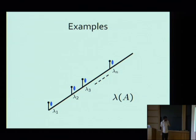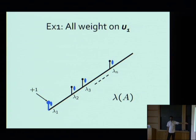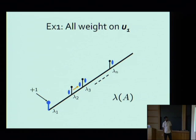In one example, if I add a vector which has all of its projection on the first eigenvector, I add all my charge to the first barrier — this pushes my first eigenvalue up. In another example, if I add equal weight on the first two eigenvectors, my first eigenvalue moves forward but not too far, because it's repelled backwards by the charge on the second barrier.